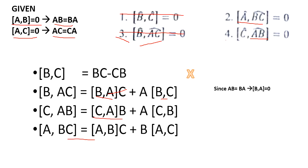For the fourth option, the commutator of CA: since [C, A] equals negative of [A, C], and [A, C] is given as zero, that term becomes zero. However, the term A times the commutator of C and B equals negative of the commutator of B and C, which is not given to be zero. So the fourth option is also not the answer.